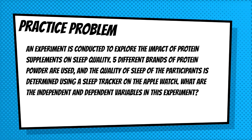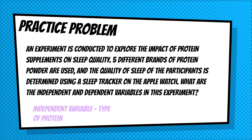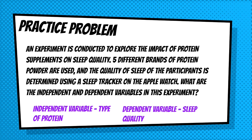Our first practice problem describes an experiment conducted to explore the impact of protein supplements on sleep quality. Five different brands of protein powder are used, and the quality of sleep of participants is determined using a sleep tracker on their Apple watches. The independent variable is the type of protein, because the experimenter manipulated which type of protein was given to participants. In response to that, they're looking for a change in sleep quality — that's the dependent variable.